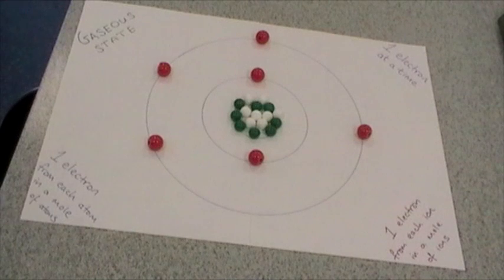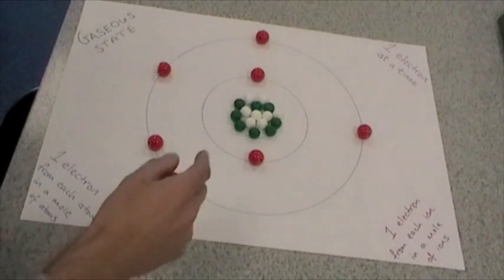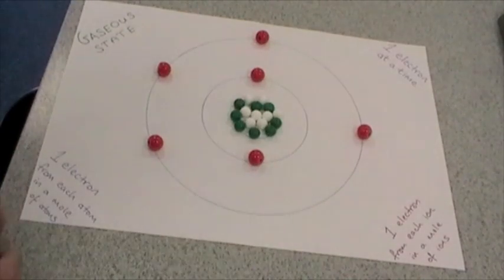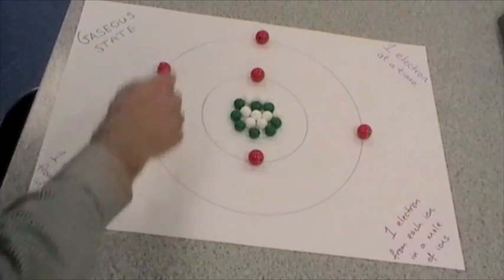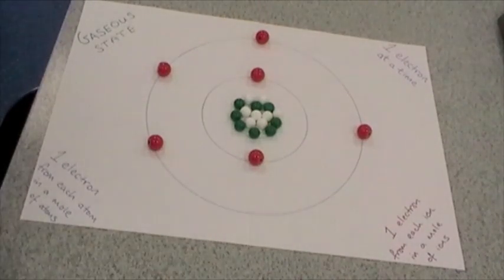So that's gone there. So what have we got now? We've still got 8 pluses in the nucleus, but we've now got 1, 2, 3, 4, 5, 6 electrons. So we've got 6 minuses and 8 pluses. What's the overall charge? We've now got a 2 plus ion.